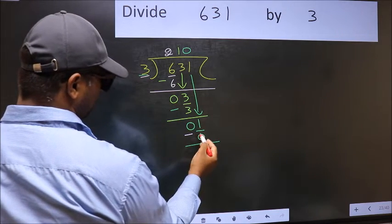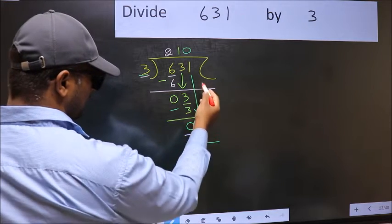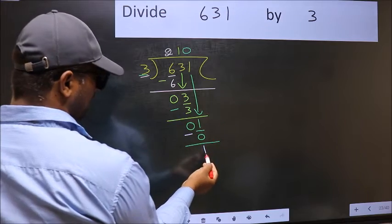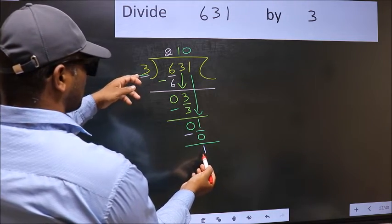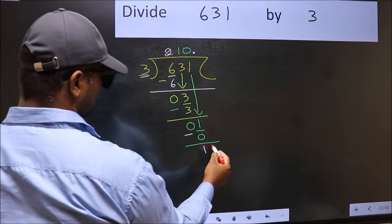Now you should subtract. 1 minus 0, 1. Over here we did not bring any number down. And 1 is smaller than 3. So now you can put a dot and take 0.